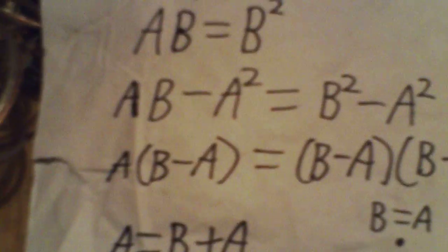And then you divide both sides by the B minus A term so you get A equals B plus A. And because A equals B as the initial condition, you simply replace B with A so you get A equals A plus A, or A equals 2A. However,